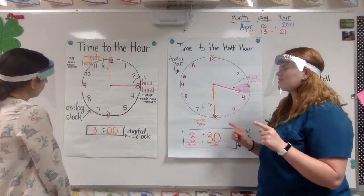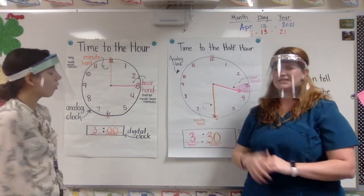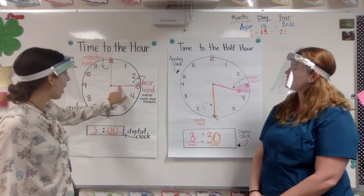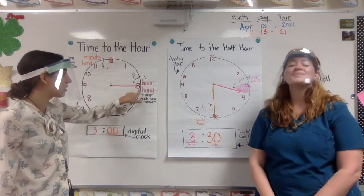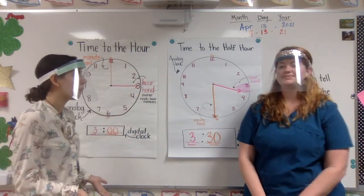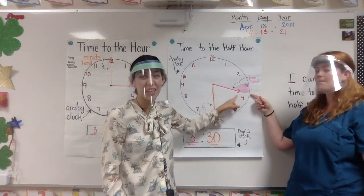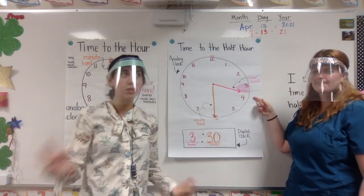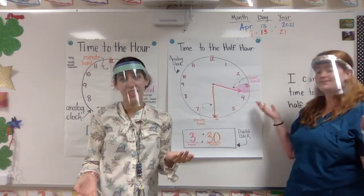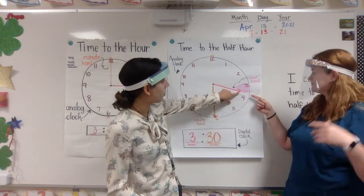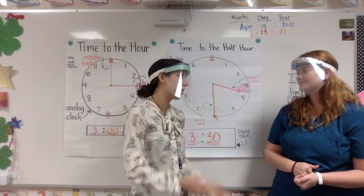But Ms. Lustico, there was something different about the hour hand too. What was different about it? I'm noticing on our charts that when we have the hour hand for time to the hour, it points directly to the big hour numbers. But when we tell time to the half hour, it's in between two hours. So we have to figure out which hour it's still in — it hasn't made it to the next hour yet, so we go back to figure out which hour we're still in.